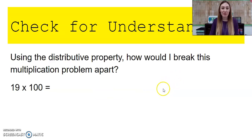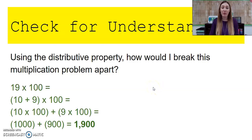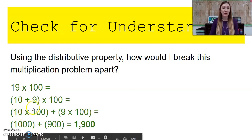Using the distributive property, how would I break this multiplication problem apart? Go ahead and pause the video if you need to for this question. So I would break my 19 into expanded form. So I would have 1, 10, giving me 10, and 9, 1s. And then I'm going to multiply 10 times 100 and 9 times 100.